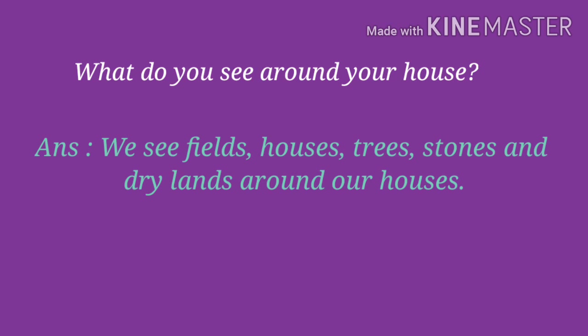What do we see around our house? We see trees, plants, creepers and fields. Not all places on earth look the same. Some places are very open and dry. In some places, trees grow very densely — that is what we call a forest.